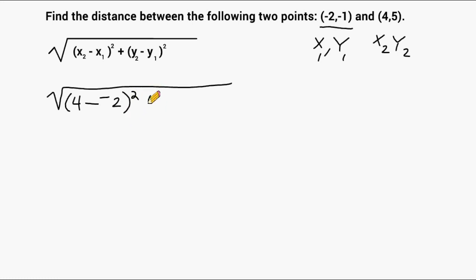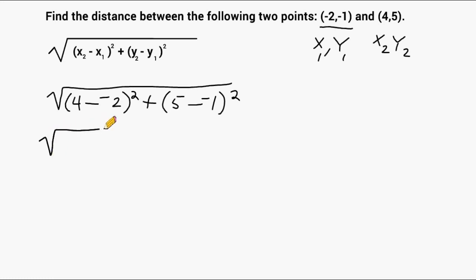We bring down our addition sign and substitute our y2 value, which is positive 5, then bring down our subtraction sign and our y1 value, which is negative 1, and square those differences as well. In our first set of parentheses we have 4 minus negative 2. When subtracting a negative, you change both signs into positives, so we really have 4 plus 2, which is 6.